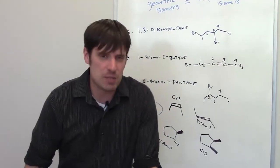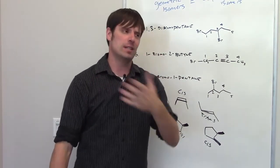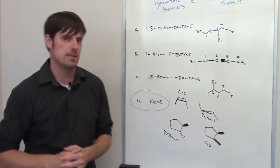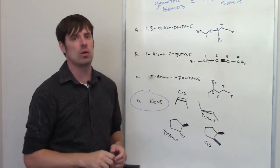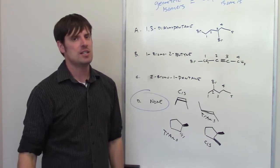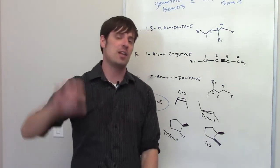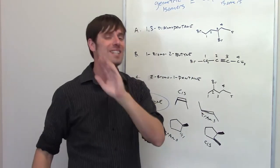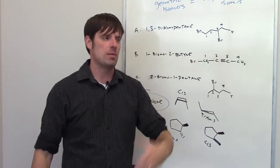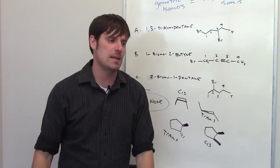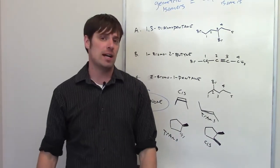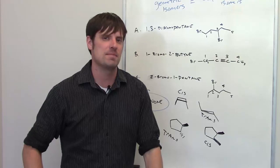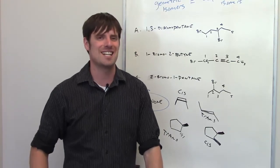Geometric isomer is an archaic phrase not commonly used anymore, but it still appears on standardized exams. It is a subcategory of stereoisomers, which generally exist as either enantiomers — non-superimposable mirror image molecules — or diastereomers, which can be more complex. If you need a review on stereoisomers, check the linked video.